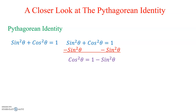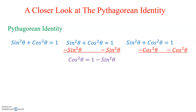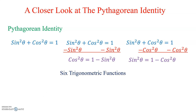This version has Cosine squared isolated. Or we can subtract Cosine squared Theta on both sides, leaving us a third version of the Pythagorean Identity where Sine is isolated. But the problem is there are actually six different trigonometric functions. Unlike the Pythagorean Theorem where we only had three sides to isolate, here in trigonometry we've got six trigonometric functions.